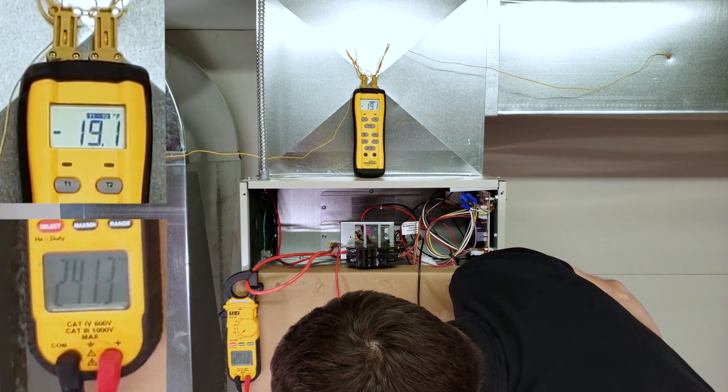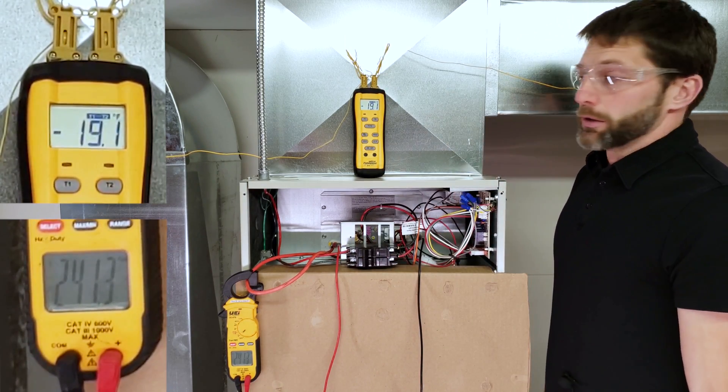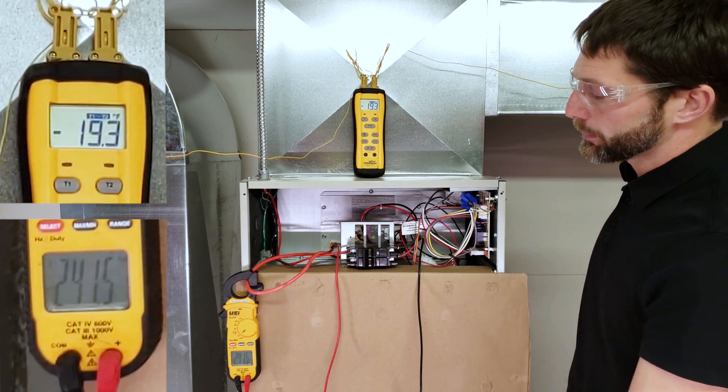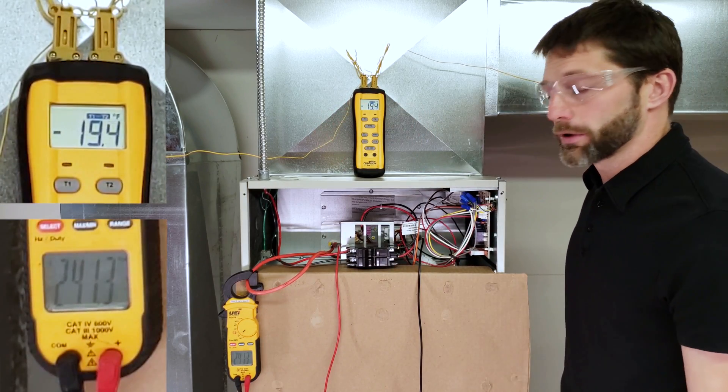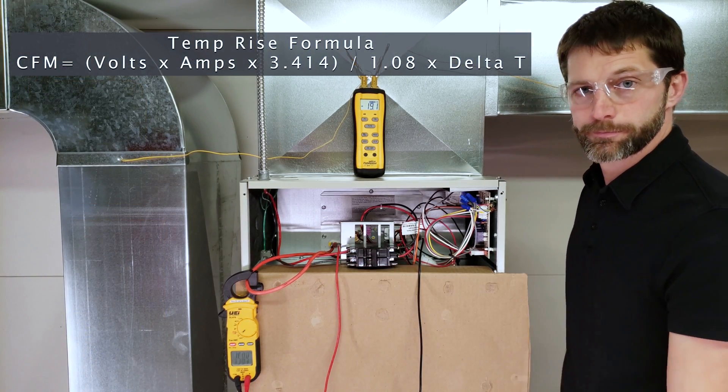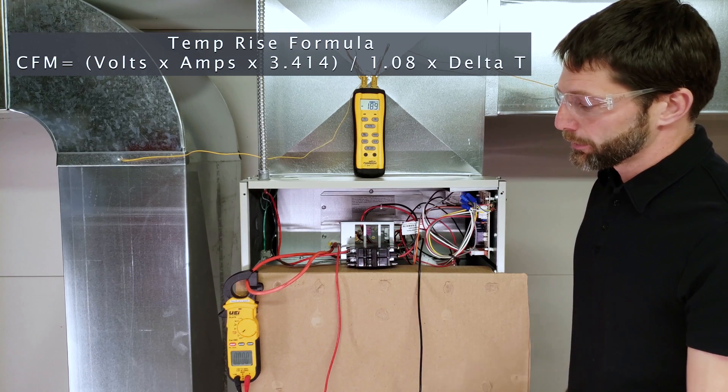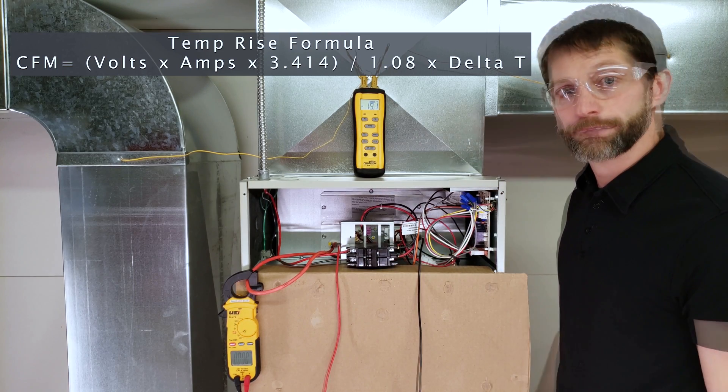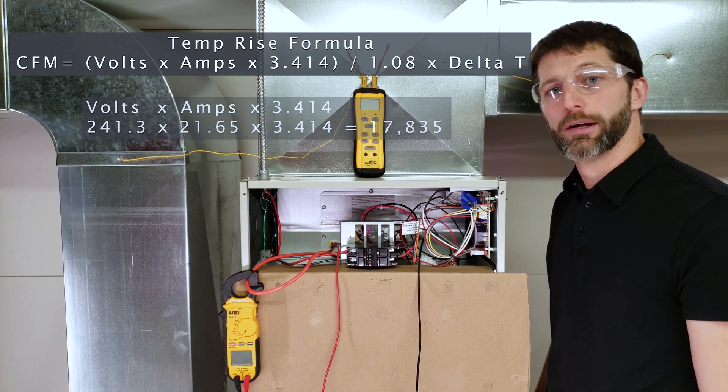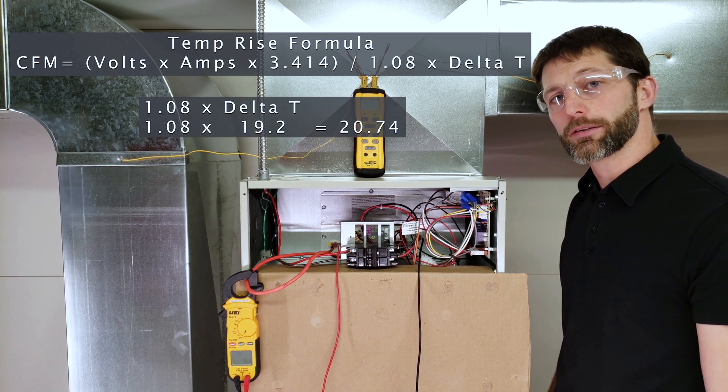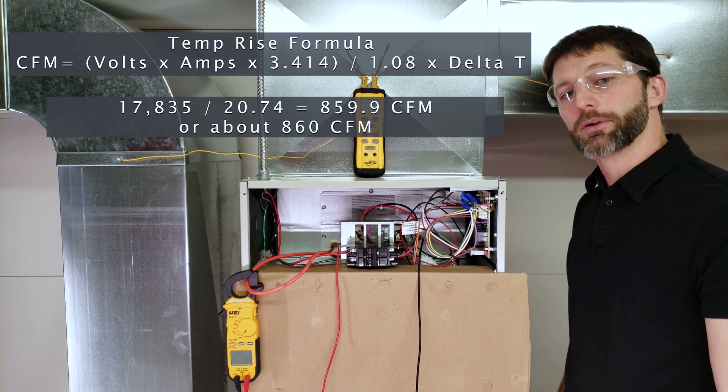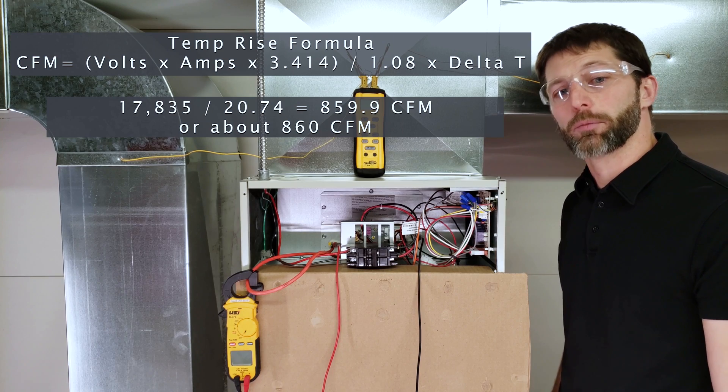Our voltage is 241.3. We have our three measurements—right about 19.2 degrees. Let's input them into our formula. I'll turn this off now at the breaker. Our volts times amps times 3.414 equals 17,835. Then 1.08 times the delta T equals 20.74. So 17,835 divided by 20.74 equals 860 CFMs.